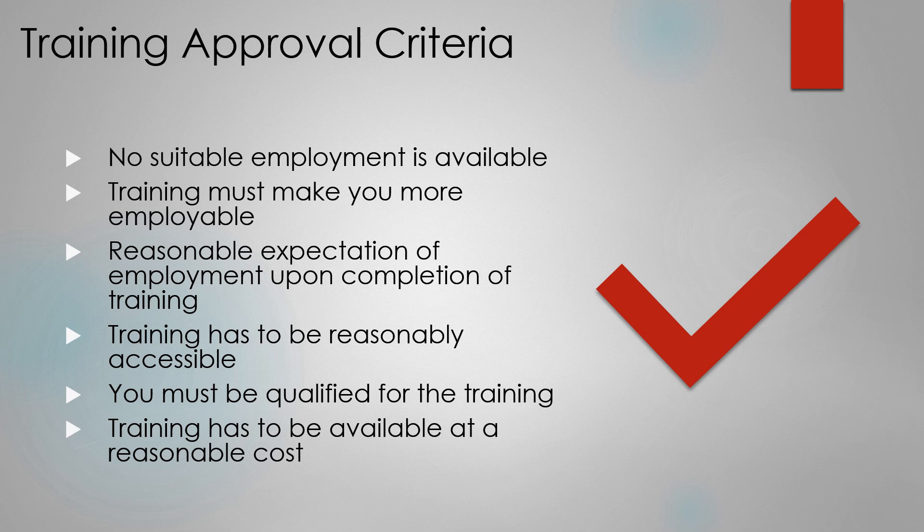To receive an approval on a training, it is required that all of the following six training approval criteria are met: no suitable employment is available; you would benefit from appropriate training; there is a reasonable expectation of employment following completion of training; training is reasonably available; you are qualified to undertake and complete such training; and training is available at a reasonable cost.